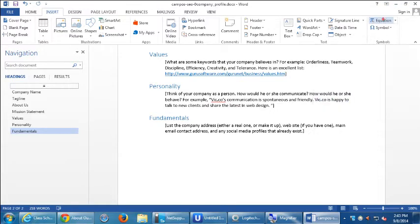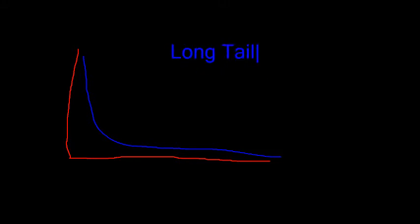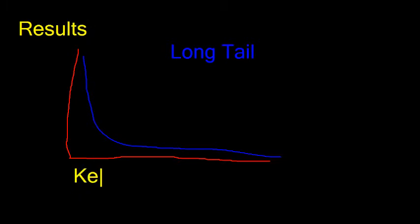Here's the long tail concept: there's a section where a particular keyword gives a lot of results — you're a needle in a haystack. Then further out, a set of keywords that are less commonly found. We want to pay attention more to that section — the long tail. Less common keywords and more specific search terms give fewer results, so you're an easier needle to find.